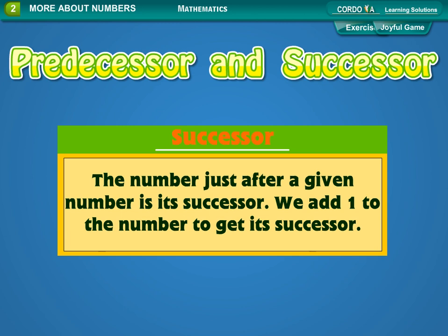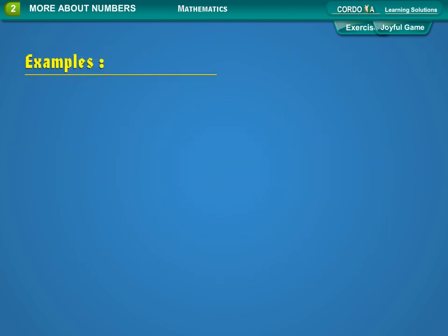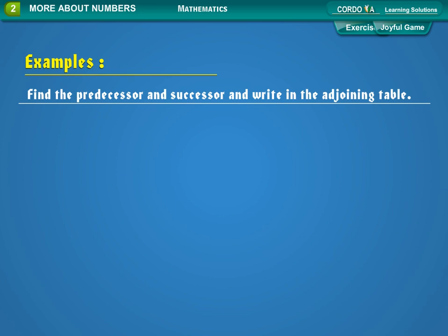We add one to the number to get its successor. Examples: find the predecessor and successor and write in the adjoining table.